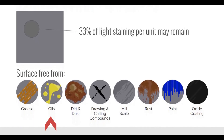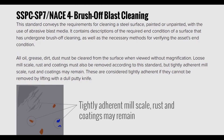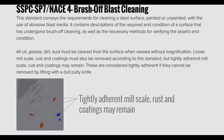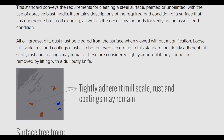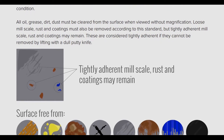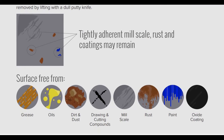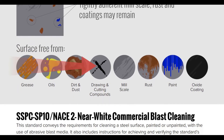SSPC-SP7 / NACE 4 Brush-off Blast Cleaning: this standard conveys the requirements for cleaning steel surfaces — painted or unpainted — with the use of abrasive blast media. It contains descriptions of the required end condition of a surface that has undergone brush-off cleaning, as well as the necessary methods for verifying that end condition. Oil, grease, dirt, and dust must be cleared from the surface when viewed without magnification. Loose mill scale, rust, and coating must also be removed, but tightly adhered mill scale, rust, and coatings may remain. These are considered tightly adhered if they cannot be removed by lifting with a dull putty knife. The surface should be free from grease, oil, dirt, dust, drawing and cutting compounds, mill scale, rust, paint, and oxide coating.